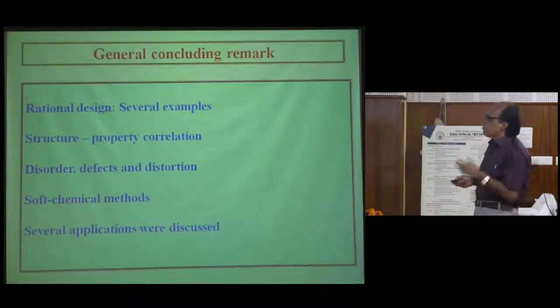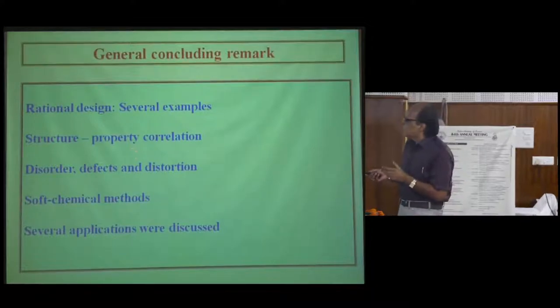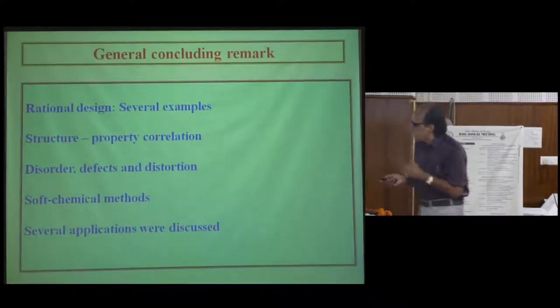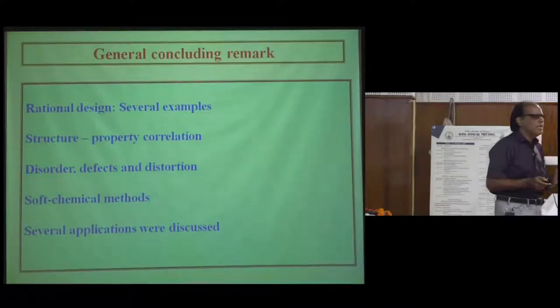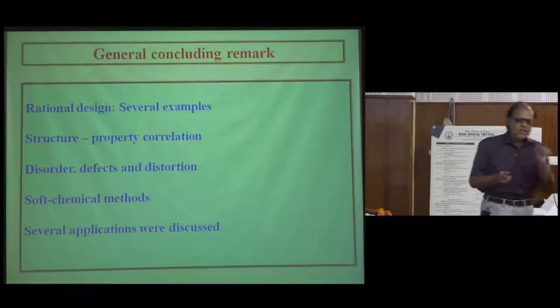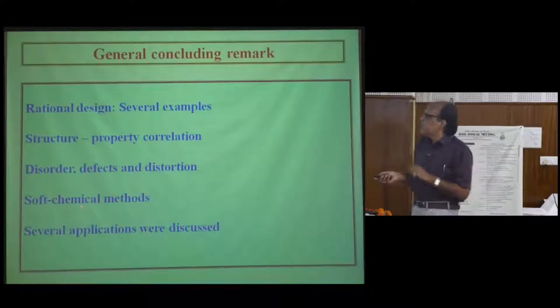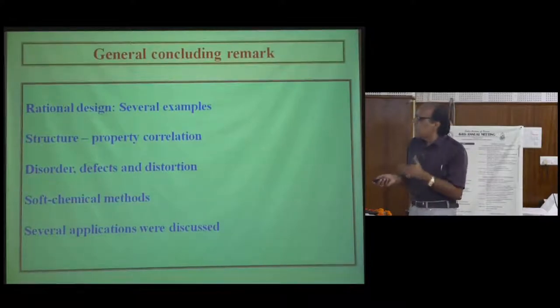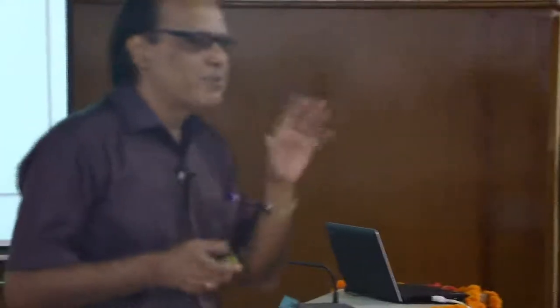In today's talk, I discussed rational design and gave examples based on structure-property correlation. I also tried to emphasize that disorder, defects, and distortion are not bad things — they can be used to design materials with desired properties. I also emphasized soft chemical synthesis methods. My today's talk was basically an amalgamation of six talks — I was tempted to show many things, so please excuse me for showing six or seven different types of examples.